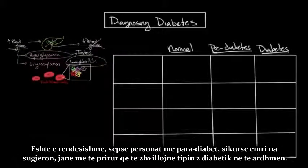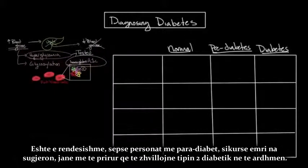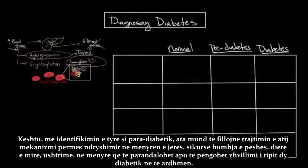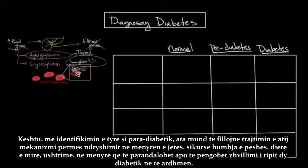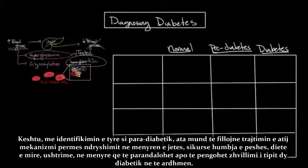Prediabetes is important because individuals with prediabetes are much more likely to develop type 2 diabetes in the future. By identifying them early, they can start treating the underlying mechanism through lifestyle modifications such as weight loss, a proper diet, and routine exercise, in order to prevent or delay the development of type 2 diabetes.